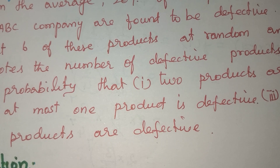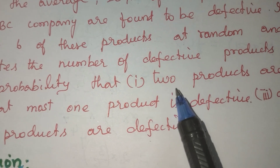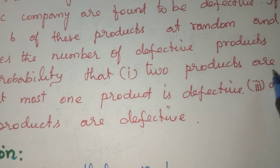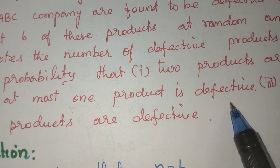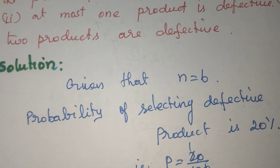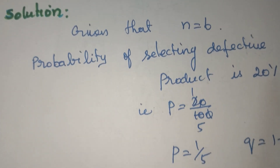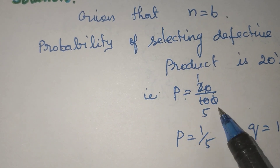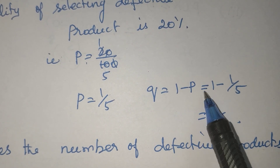20% of the products are defective. Given that n is equal to 6. Probability of selecting a defective product is 20%. P is equal to 20 by 100, which simplifies to 1 by 5. Q is equal to 1 minus P, which is 1 minus 1 by 5.